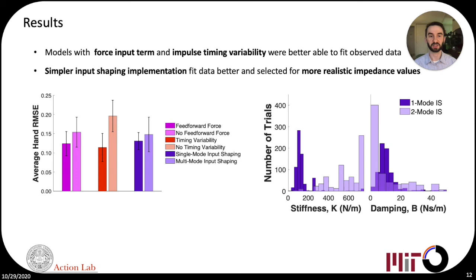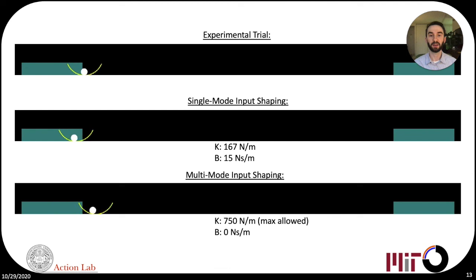Generating input shaping impulses based only on a single mode generated trajectories that fit the data better than the full multi-mode input shaping and selected best-fit impedance values much closer to what is typically observed in the upper limb, namely lower hand stiffness. This evidence supports the hypothesis that humans simplify object manipulation by composing sub-movements and hand impedance.